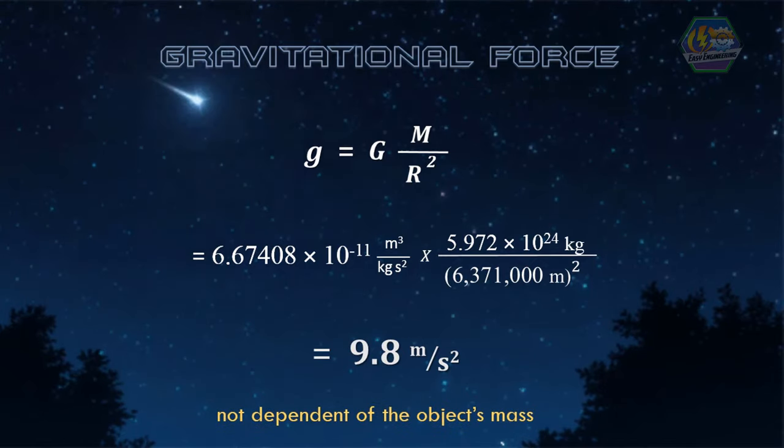Do you know what is interesting? This value of g is not dependent on the object's mass. From the equation, it is dependent only on the mass of the Earth and the radius of the Earth. It has nothing to do with the size or mass of the object.